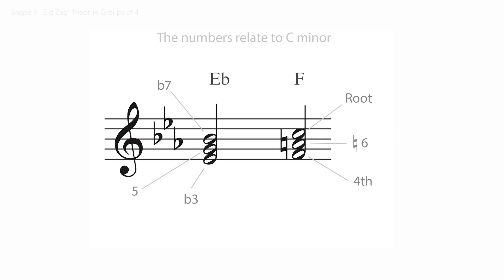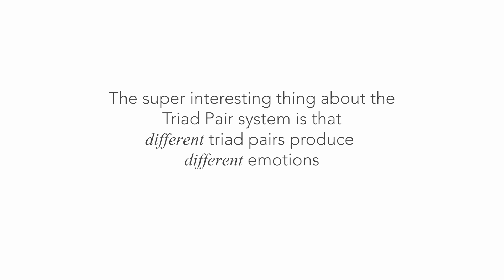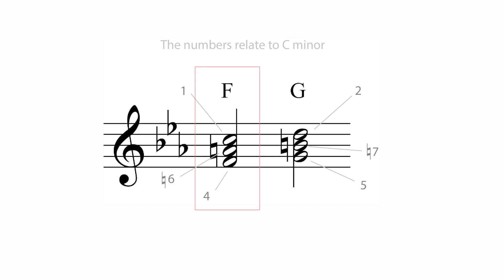The super interesting thing about the triad pair system is that different triad pairs produce different emotions. Now another pair of triads, G major and F major. A stronger sound there, implying a different soundscape completely.